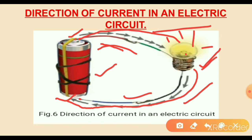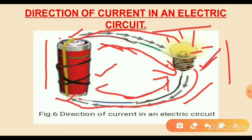The current enters through one terminal of the bulb, flows through the filament inside the bulb, and comes out through the other terminal. When the current flows through the filament, it starts glowing. The current flows from the positive terminal through the filament — tungsten — and that is the direction of current in an electric socket. I hope you all have understood the flow of current in a socket.